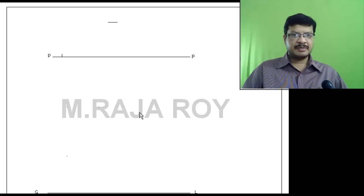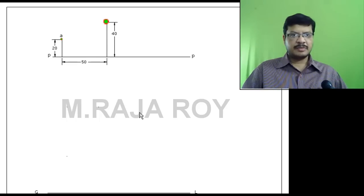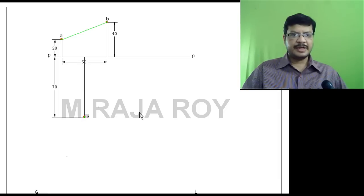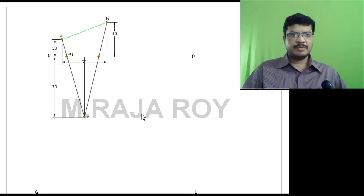Now we will see the top and side view method. Take the picture plane and draw the top view just as in the previous case. This is the top view of the line. Next, take the top view of the station point. Obtain A1 and B1 points.